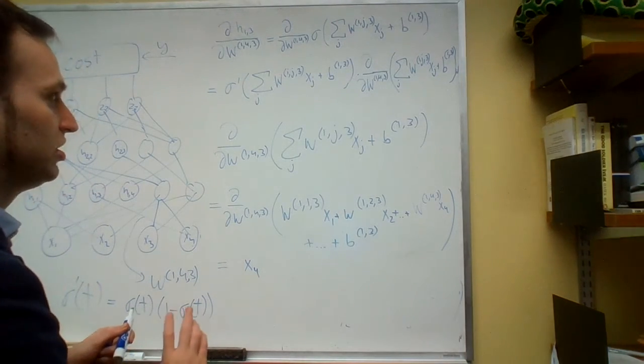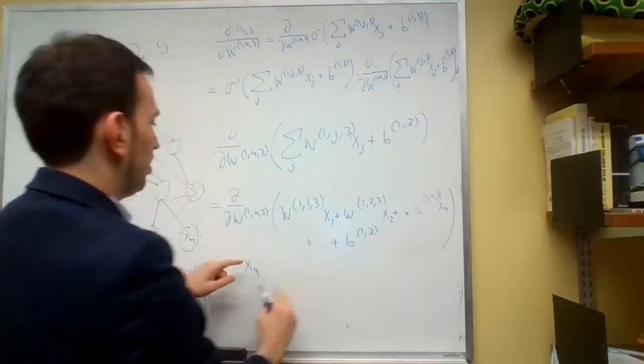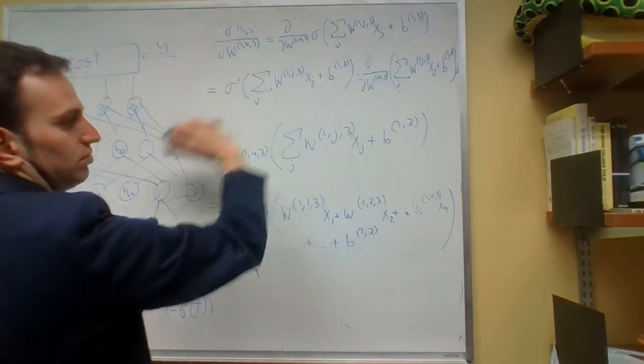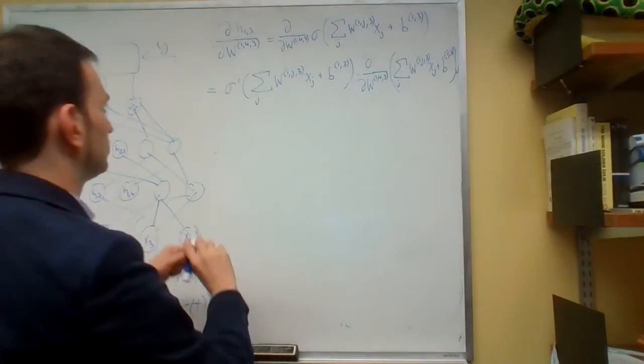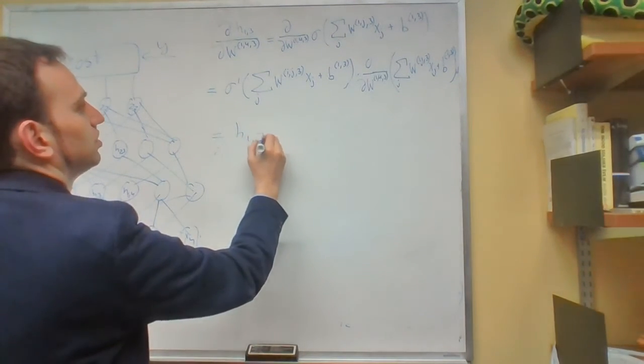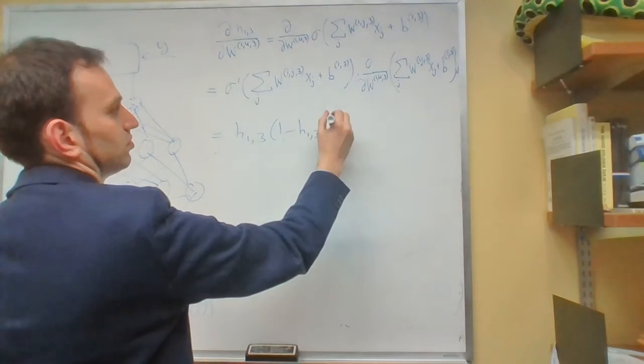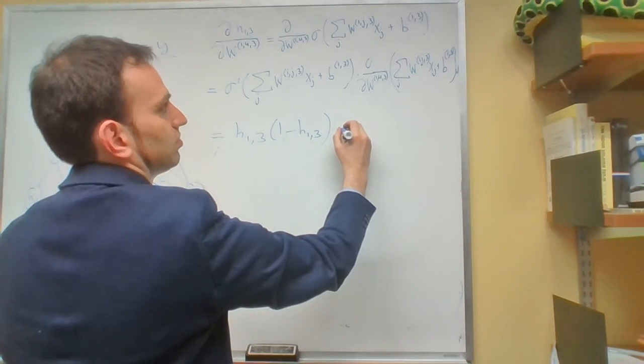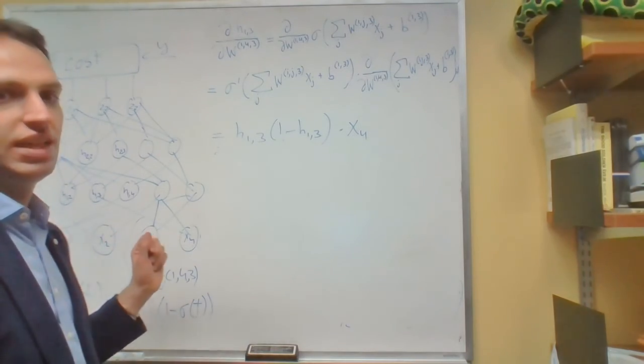What does it mean? It means that we computed this, we computed this, turned out to be just x4, which means that we get to write h13 times 1 minus h13, this is this guy, we worked it out, times x4. That's it.